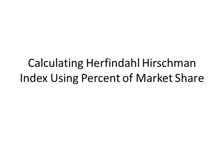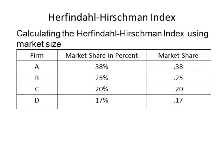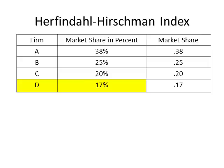Let's calculate the HHI using a percent of market share. Suppose an industry has four firms: Firm A, B, C, and D. Firm A has 38% of the market share. Firm B has 25% of the market share. Firm C has 20% of the market share. And Firm D has 17% of the market share.